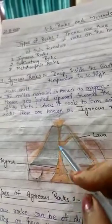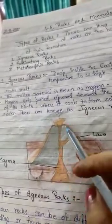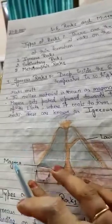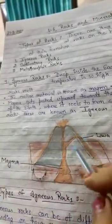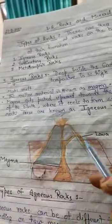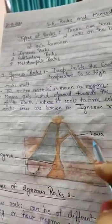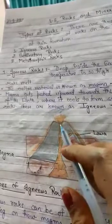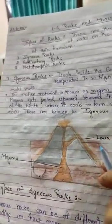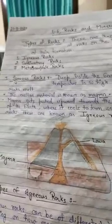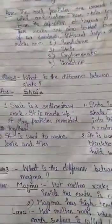So when these molten rocks are inside the earth, this is inside the earth, it is called magma. And when it flows outside the earth or when it comes on the surface of the earth, it is called lava. Magma has high temperature and lava has less temperature. So this is the difference between magma and lava. Now we will move to the next question.